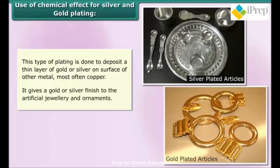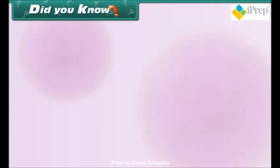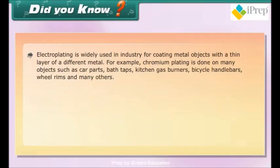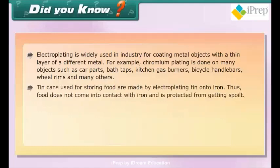Did you know? Electroplating is widely used in industry for coating metal objects with a thin layer of a different metal. For example, chromium plating is done on many objects such as car parts, bath taps, kitchen gas burners, bicycle handlebars, wheel rims, and many others.